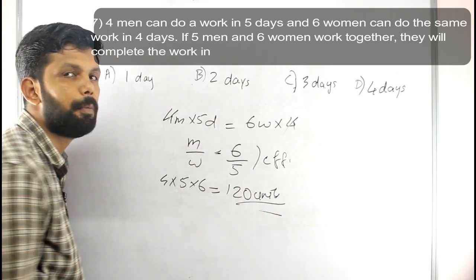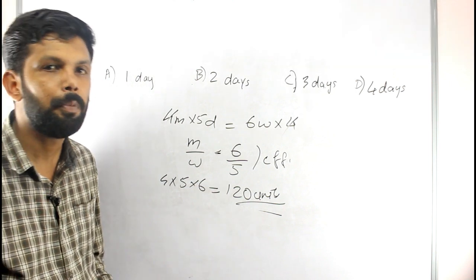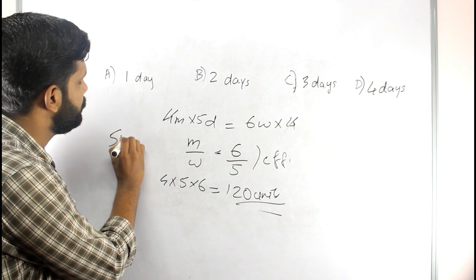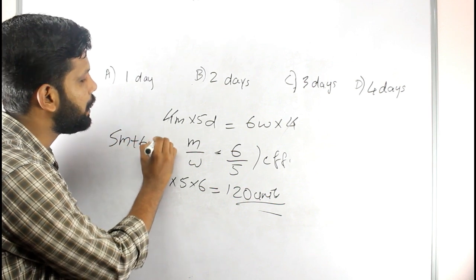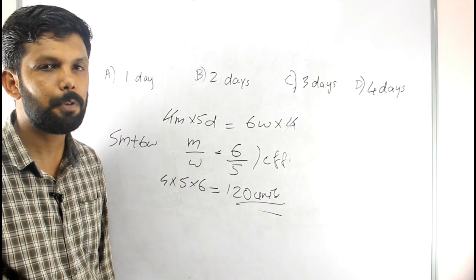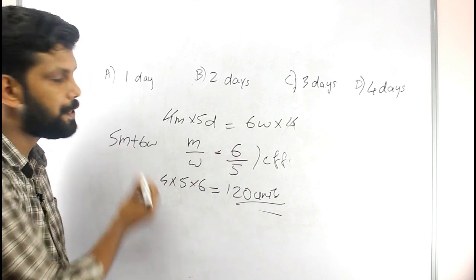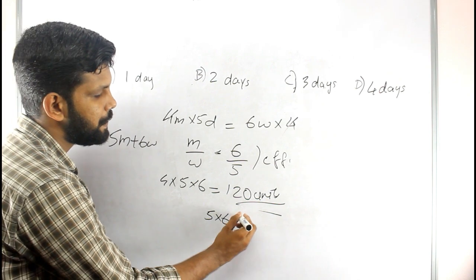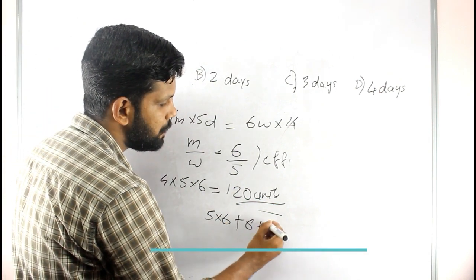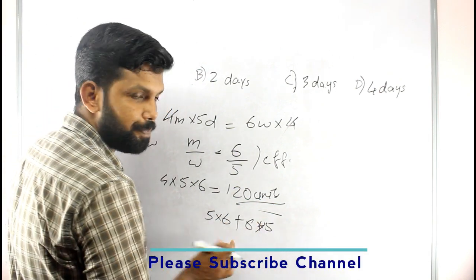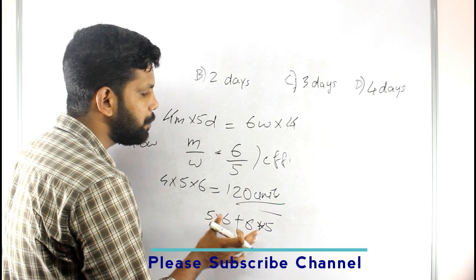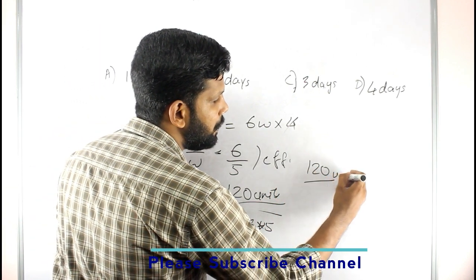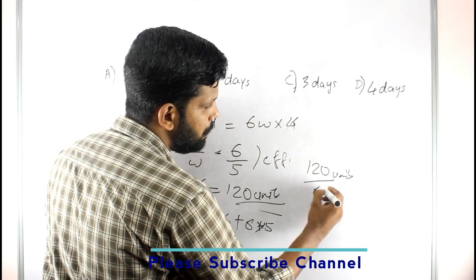We have 120 total units of work. Now if 5 men plus 6 women work together, the combined efficiency is 5 men into 6 plus 6 women into 5, which equals 30 plus 30 equals 60 units per day. So 120 units divided by 60 equals 2 days is the answer.